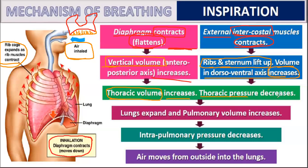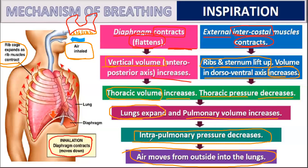As the thoracic volume increases, the thoracic pressure decreases — when volume increases, pressure decreases. As the pressure decreases, the lungs expand and pulmonary volume increases. Because the intrapulmonary pressure decreases, air moves from outside to inside the lungs. This decrease in intrapulmonary pressure is very important.